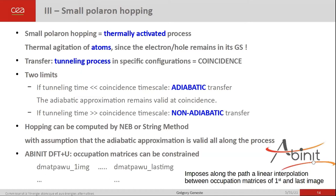My last part is about small polaron hopping and how to simulate it. Remember that small polaron hopping is a thermally activated process, but in which the thermal energy necessary to overcome the barrier is provided by the atoms and not by the electrons or the hole, which remains in its ground state. The polaron transfer is a tunneling process that takes place in specific configurations, usually called coincidence configurations, in which the charge would have the same energy if localized on the initial or on the final site. There are two limiting cases: if the tunneling time is smaller than the coincidence timescale, the hopping is said to be adiabatic; if not, it is said to be non-adiabatic. Under the assumption that the transfer is adiabatic, the hopping can be simulated by the nudged elastic band or by the string method.